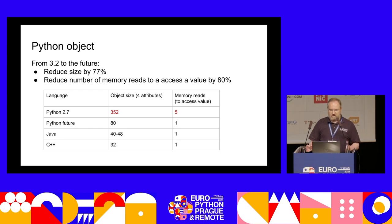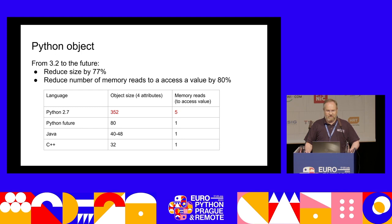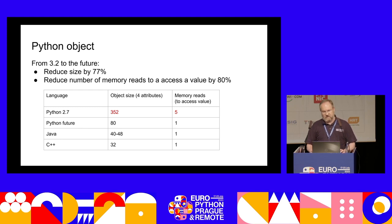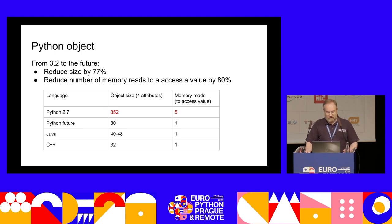Over roughly the last 10 years, we've reduced the Python object size by 77% and reduced the number of memory reads to access attributes by 80% in the future version. Compared to Java or C++, Python now requires only one memory read — with some additional checks to ensure we can use the fast path — and we're in roughly the same order as Java and C++.